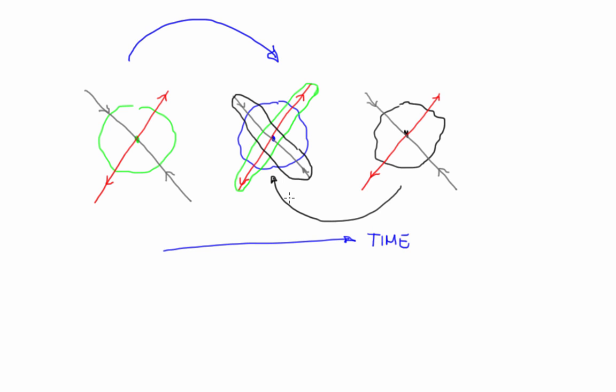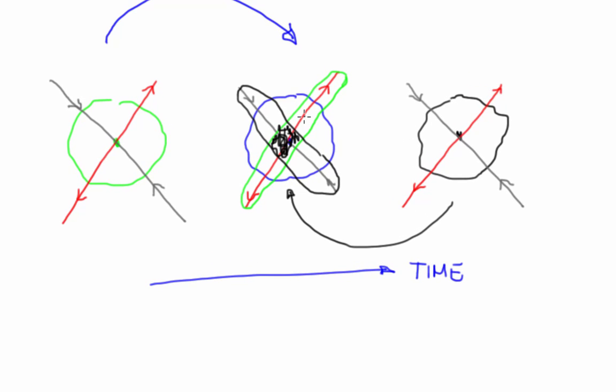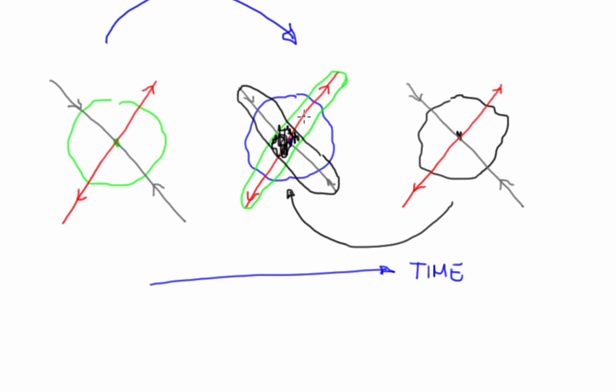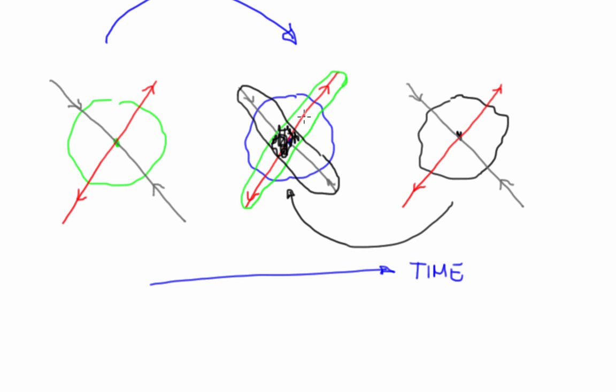If you did the evolution right, all three of those should really be at the same point in state space, so the true value will be somewhere in this overlap region. And notice that that overlap region is a lot smaller than the original noise balls. This scheme is due to Farmer and Sidorowicz.